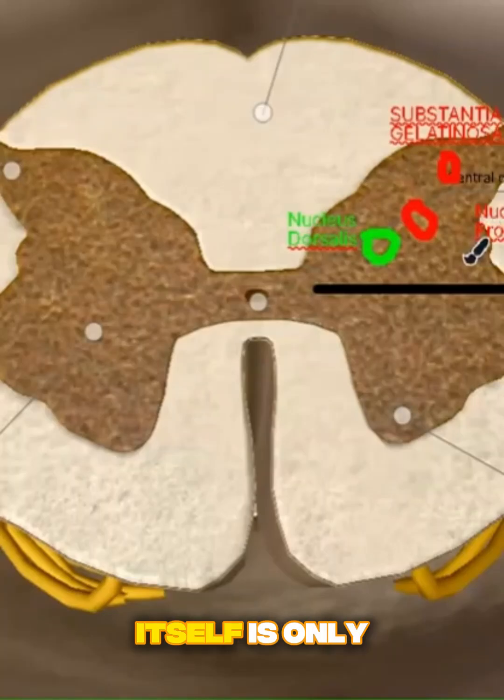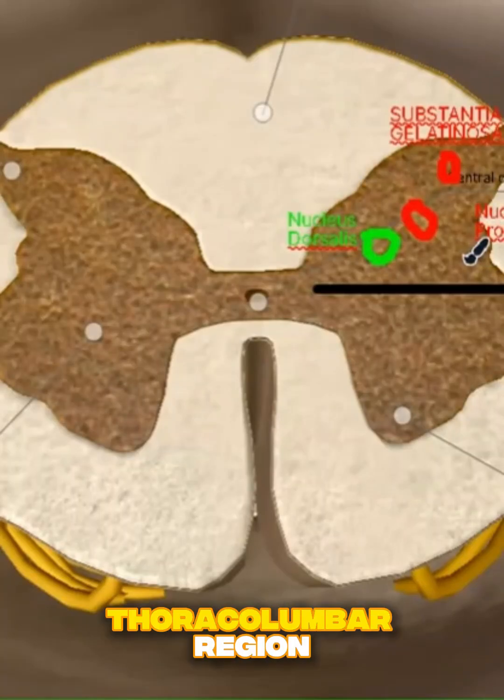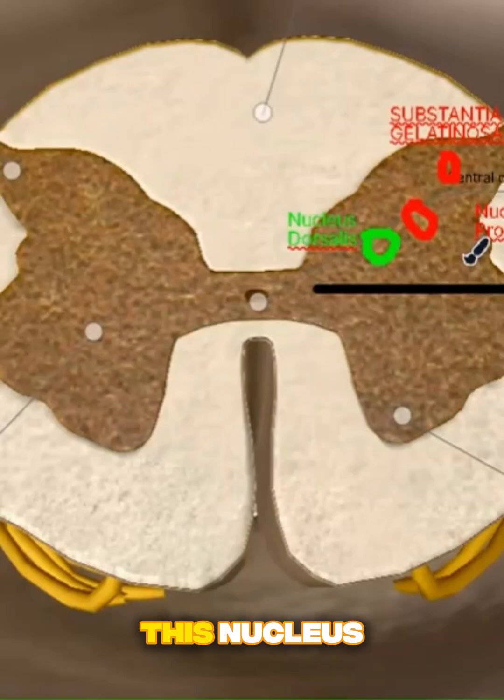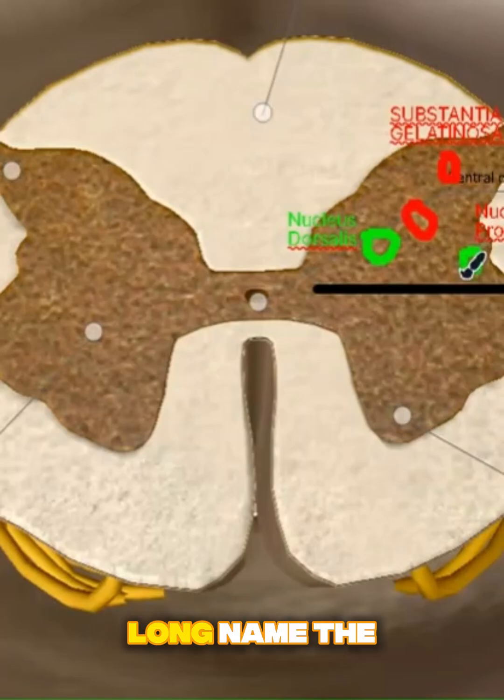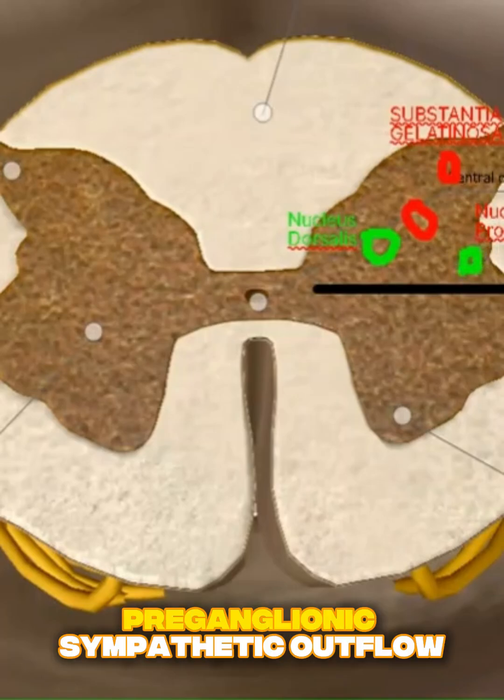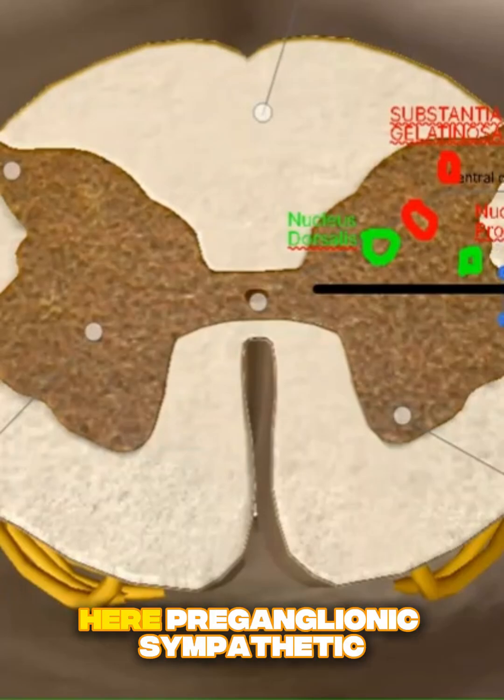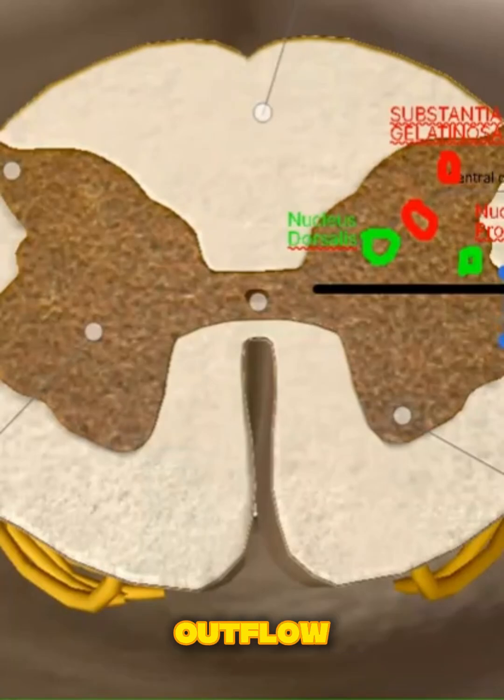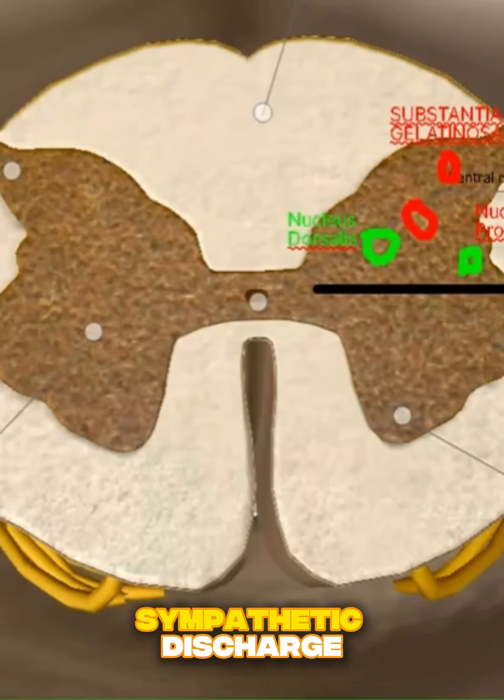I forgot to mention, the lateral horn itself is only present in the thoracolumbar region. Why? Because of the presence of this nucleus. And this nucleus is known as, it's a quite long name, the preganglionic sympathetic outflow. I'll label it here. Preganglionic sympathetic outflow. Let's put this here so it's easy to appreciate. It is from this nucleus that you have your sympathetic discharge.